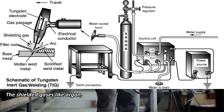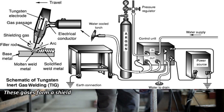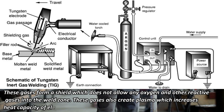Shielding gases like argon and helium are supplied through pressure and regulating valves to the welding torch. These gases form a shield which does not allow oxygen or other reactive gases into the weld zone. They also create plasma which increases the heat capacity of the electric arc, thus increasing welding ability. For welding thin material no filler metal is required, but for making thick joints, filler material in the form of rods is fed manually by the welder into the welding zone.